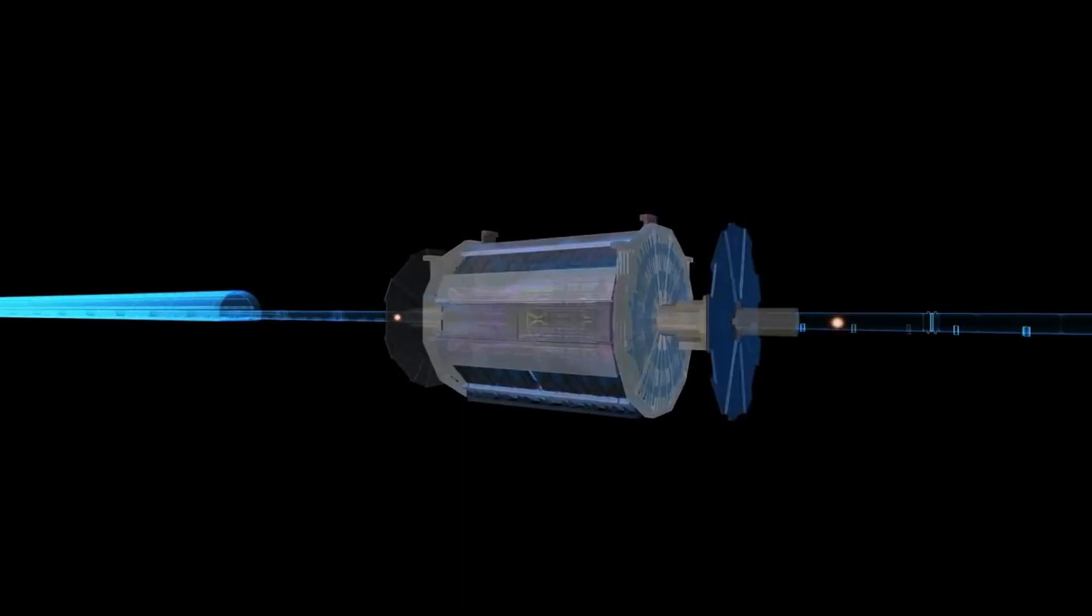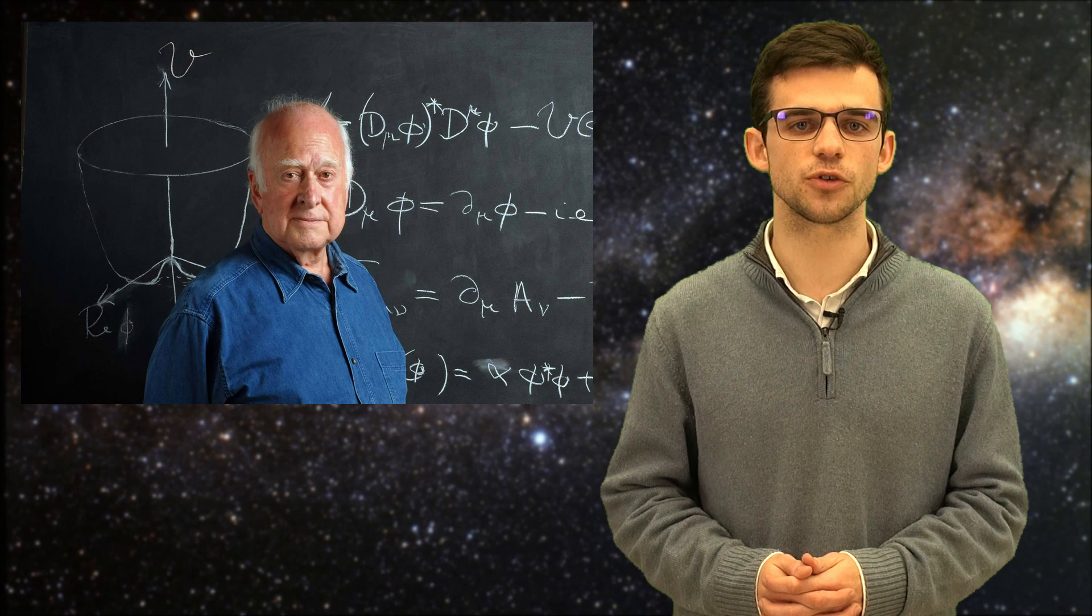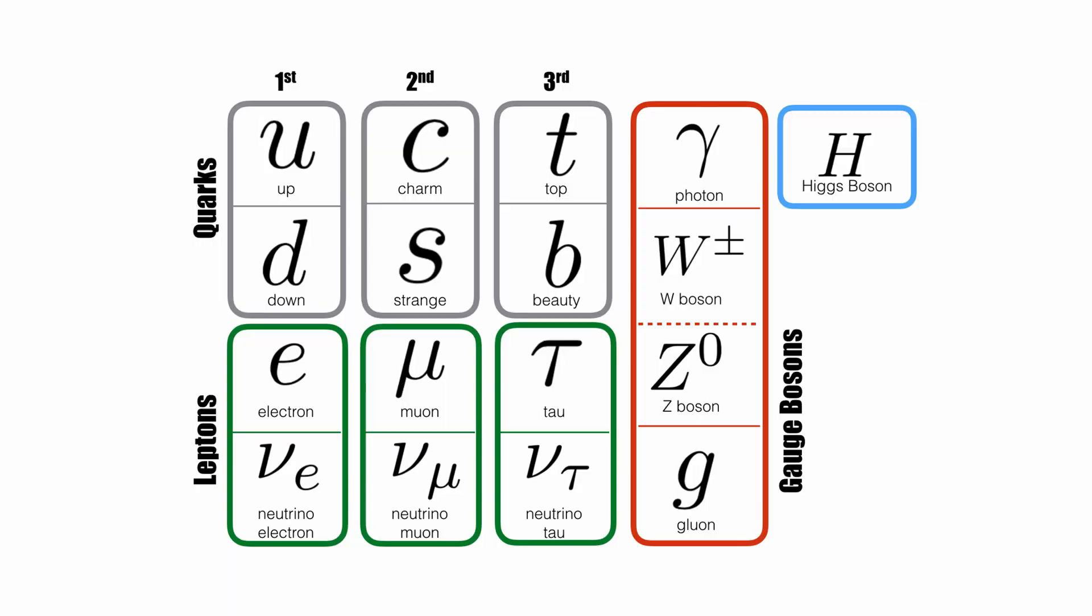One way of testing the theory is by colliding particles at high energies through the Large Hadron Collider at CERN, the largest and most complex machine ever built and the one which made possible to discover the famous Higgs boson in 2012.